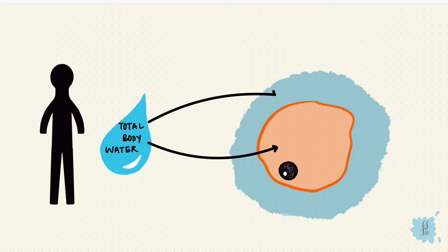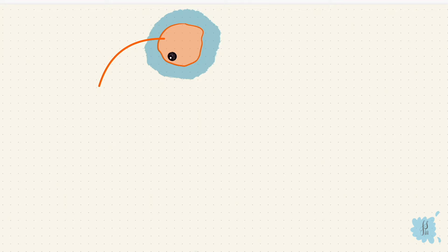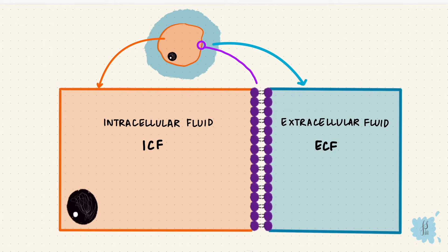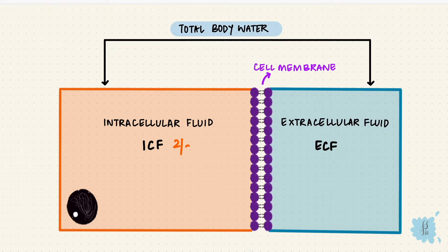If we consider the water content of the insides of all the cells of the body as one compartment, that is the intracellular fluid, or the ICF. And all of the water outside the cells together forms the extracellular fluid, or the ECF. A cell membrane is what separates the two. Most of the fluid is inside the cells — that's two-thirds of the total body water — so the remaining one-third would be the extracellular fluid.